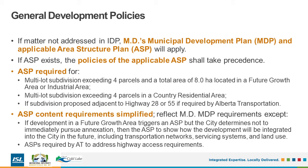If a matter is not addressed in the IDP, the policies of the MD's Municipal Development Plan and any area structure plans that are in place will apply. If an ASP exists, the policies of the ASP take precedence. An ASP will be required prior to the approval of any subdivision in a future growth area or industrial area if the subdivision exceeds 4 parcels and a total of 8 hectares, if a subdivision exceeding 4 parcels is proposed in a country residential area, or if an ASP is required by Alberta Transportation. If a subdivision in a future growth area triggers an ASP and the city decides not to annex the land, then the ASP will need to show how the development will be integrated into the city's transportation network, servicing systems, and land use pattern. Any ASP required by Alberta Transportation will need to address highway access.